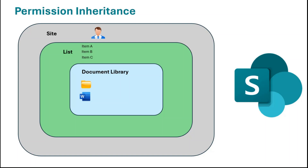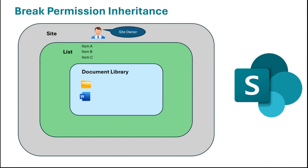In SharePoint, we can break this inheritance. Let's say a user is part of the site owners group and therefore has owner permission on the complete site — including the list and document libraries. But if the requirement is to give this user view-only permission on the document libraries, we can break the permission inheritance between the site and the document library and use unique permissions on the document library. This way, the user will have owner permission on the site and list, but view-only permission on the document library.